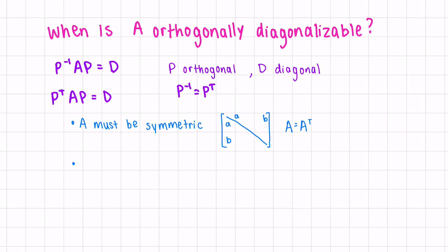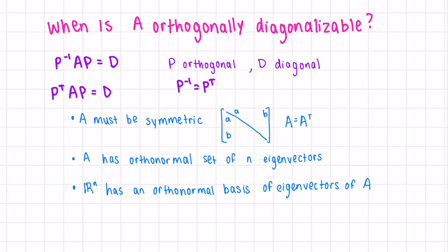We could equivalently say that A has an orthonormal set of n eigenvectors. In other words, Rn has an orthonormal basis of eigenvectors of A. If a matrix is symmetric, the distinct eigenvectors are automatically orthogonal, where the multiplicity is 1.